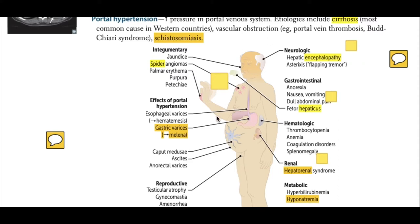Caput medusae presents as visible veins on the abdomen due to abdominal distension. Ascites occurs due to increased fluid in the abdominal cavity. Anorectal varices involve anorectal bleeding due to trauma or injury inside the rectum.